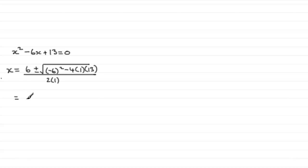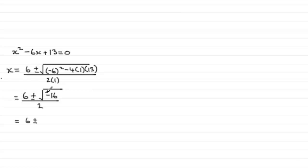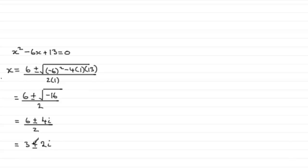If we work this out we end up with 6 plus or minus the square root of 36 minus 52, which comes to minus 16, all divided by 2. We've got 6 plus or minus and the square root of minus 16 is 4i, all divided by 2. So our roots turn out to be 6 divided by 2, which is 3, plus or minus 4i divided by 2, which is 2i. So we have two roots: 3 plus 2i and 3 minus 2i — and do you notice that they are a complex conjugate pair?